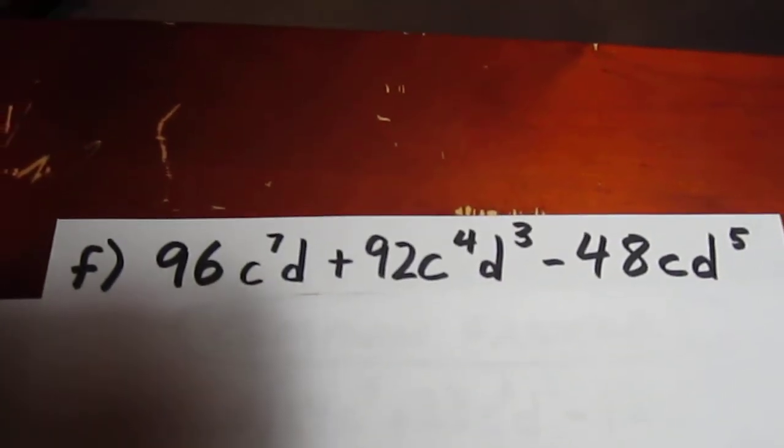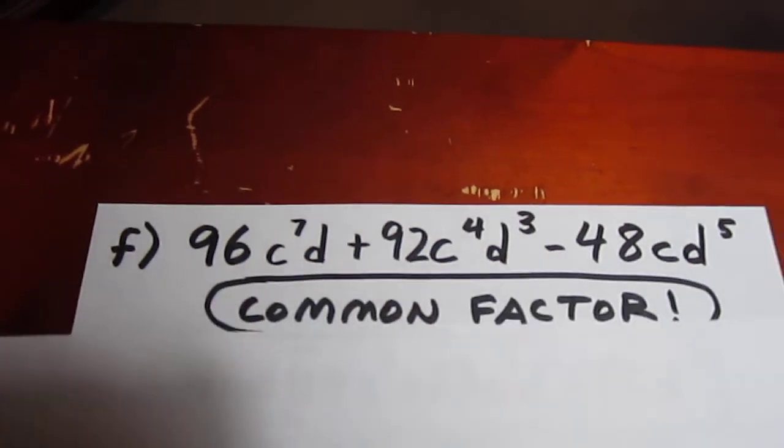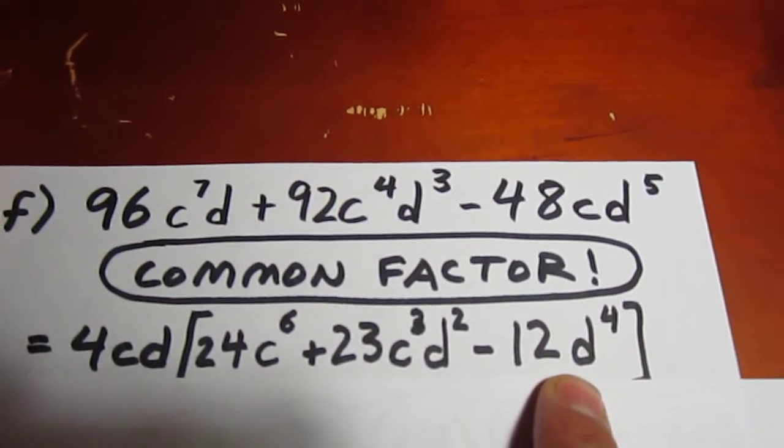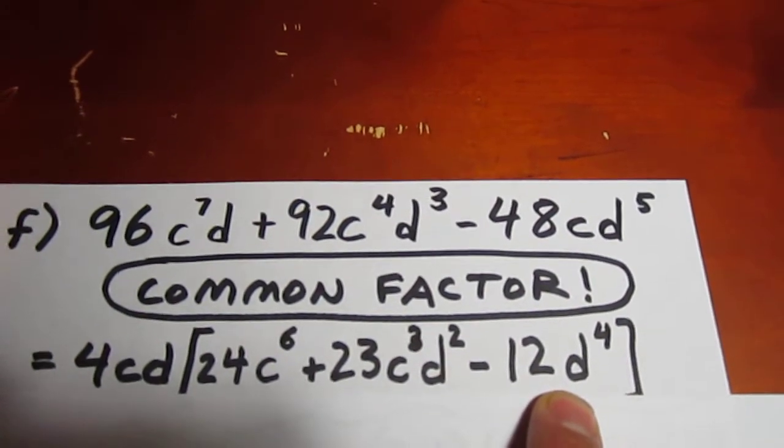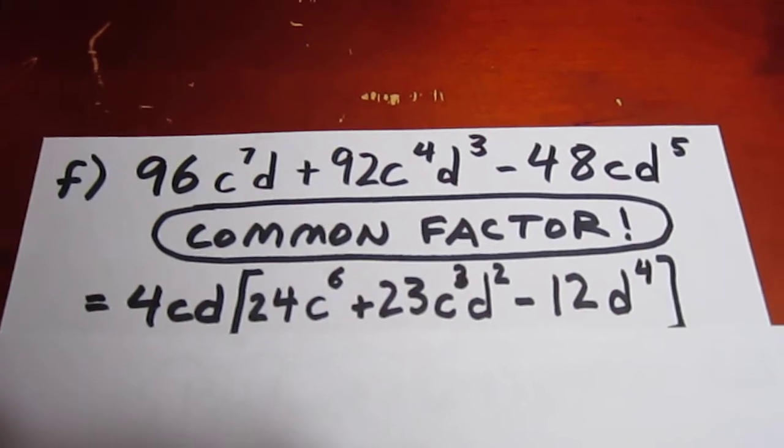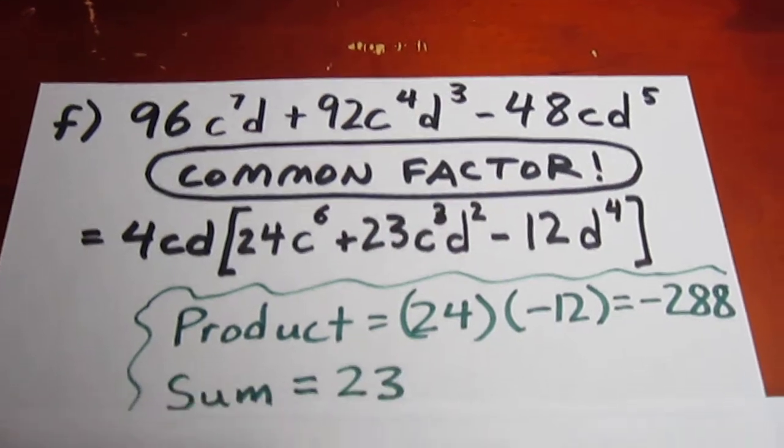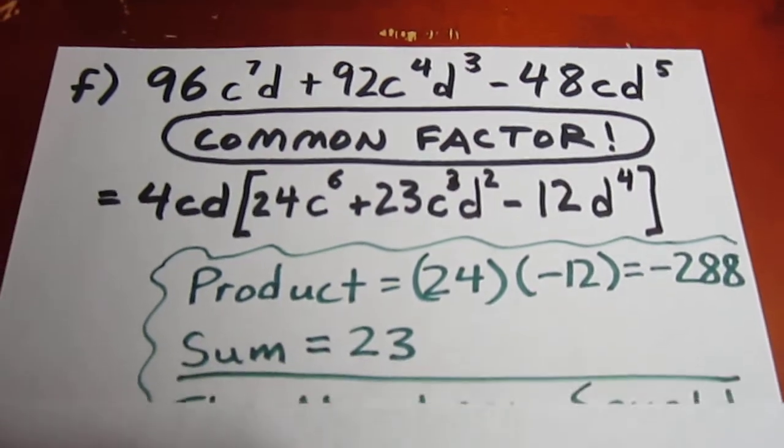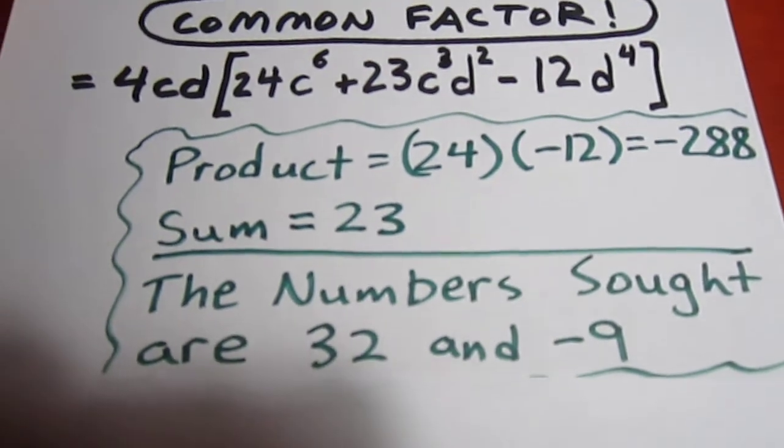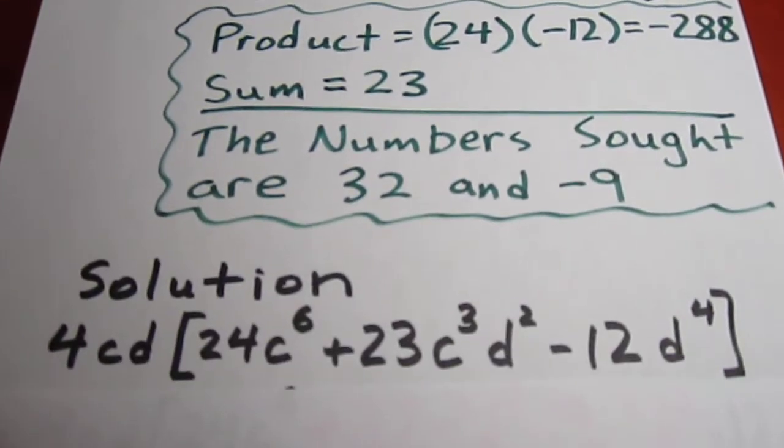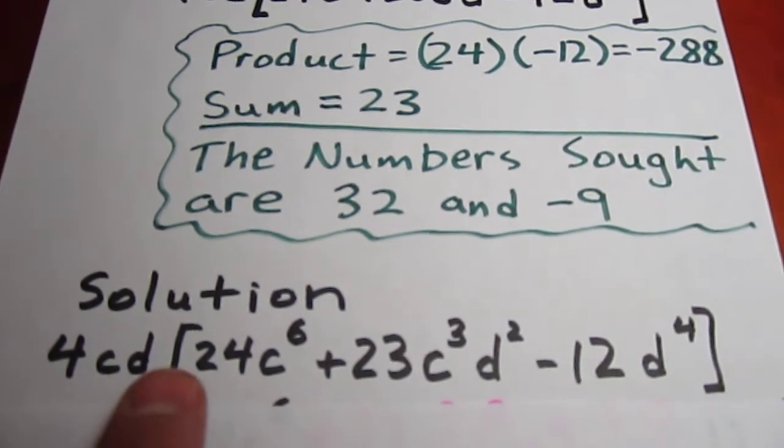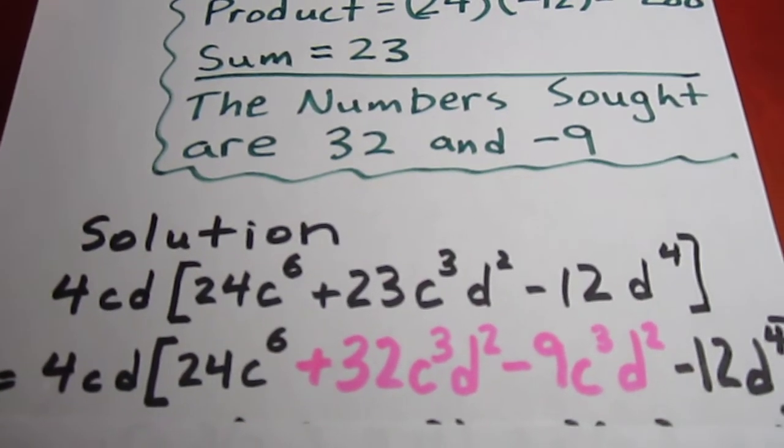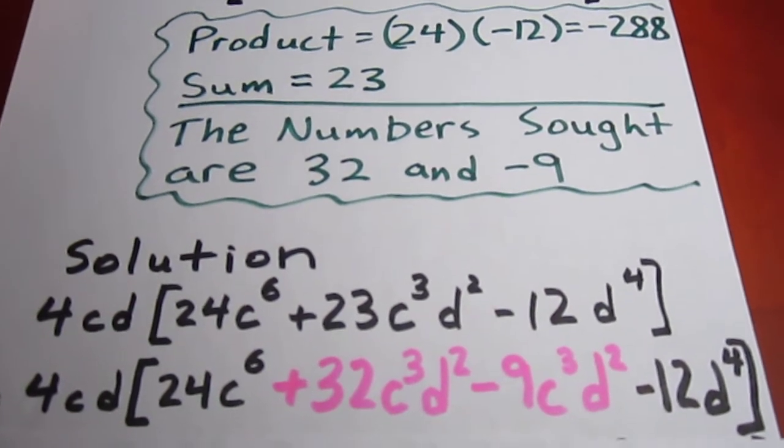Huge numbers, and we realize perhaps that we should common factor first. We're going to do that factoring out 4cd, which leaves us with a trinomial with relatively large terms, large coefficients. There's no shortcut at this point. We just say 24 times -12 is -288, and we have a sum of 23. So we're looking for a positive and a negative number in this case. We realize that the numbers sought are 32 and -9. It takes a little bit of effort to get that. So we can then decompose our middle term, remembering to carry along our common factor. I call it a passenger at this point. It's not doing any work. We decompose that 23c³d² into 32c³d² - 9c³d².